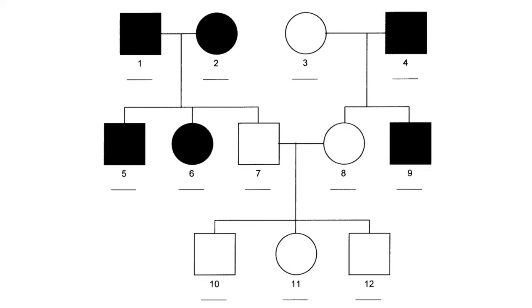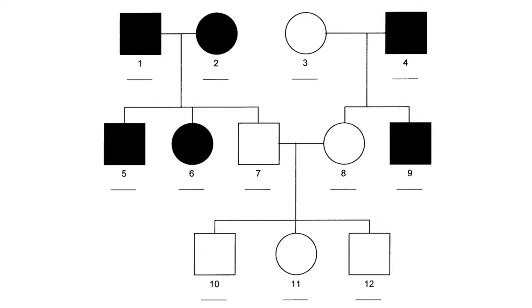Taking a closer look at this pedigree, it does seem to make sense that this is autosomal dominant. If at least one parent has this disorder, it provides a great likelihood that the second generation will have it as well. Another important tell is individuals 7 and 8 — if this is autosomal dominant, then individuals 3, 7, 8, 10, 11, and 12 must be homozygous recessive because they don't have the disorder. Two unaffected homozygous recessive individuals will never produce an offspring with a dominant disorder — the same logic we used to eliminate autosomal dominant in the previous pedigree.